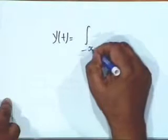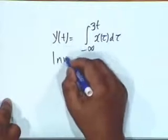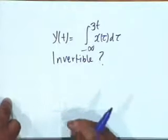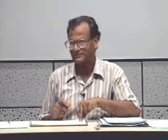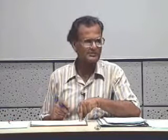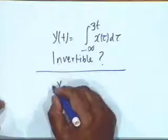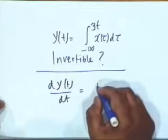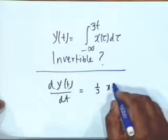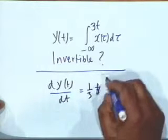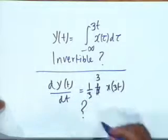Finally, is Y(T) = integral from minus infinity to 3T of X(tau) d(tau) an invertible system? Yes — if you differentiate, then dY/dT shall equal X(3T) (or one-third of X(3T), which we shall clarify in the tutorial). We can then make a time scaling transformation of the independent variable to recover X(T). The fact is we can get back X(T), and therefore the system is invertible.